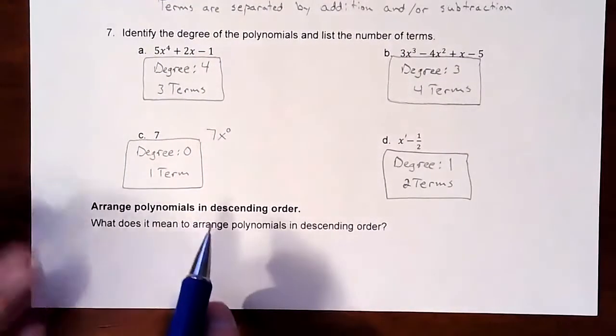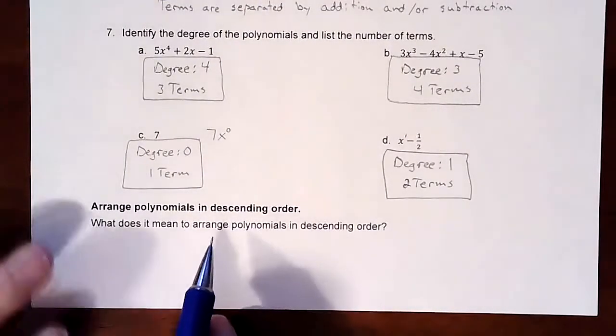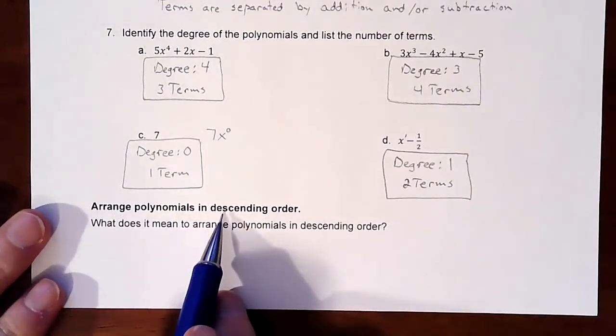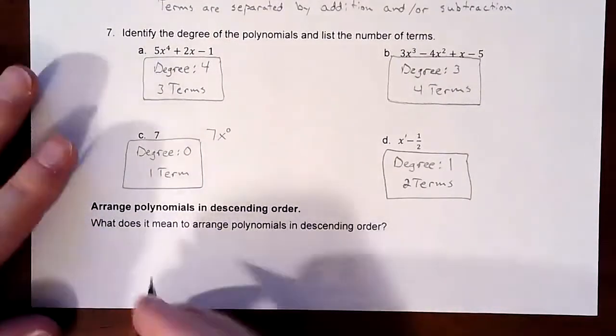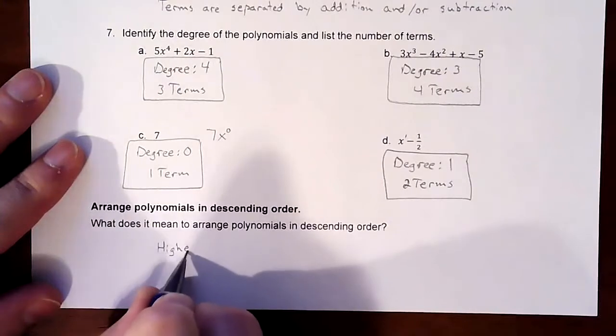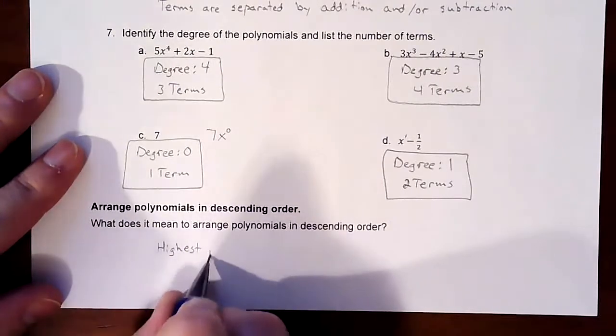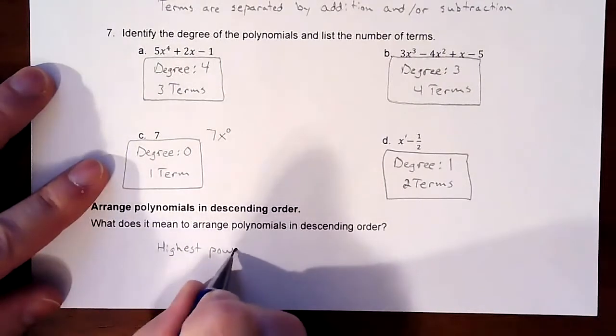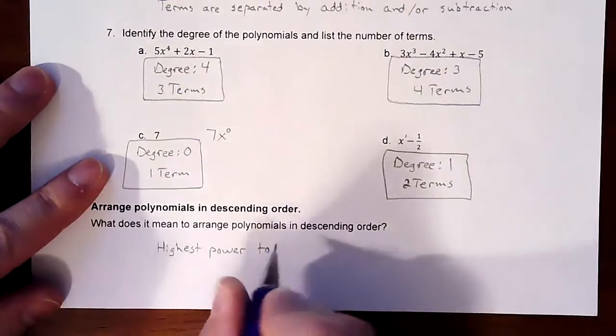In this video, we are going to arrange polynomials in descending order. So what does that mean? All we're going to do is go from the highest power to the lowest.